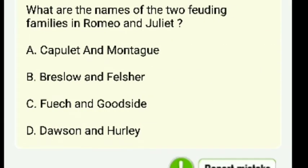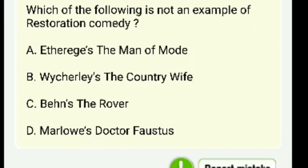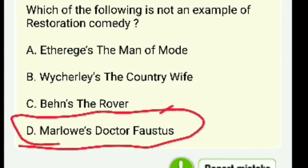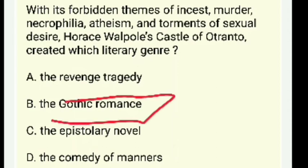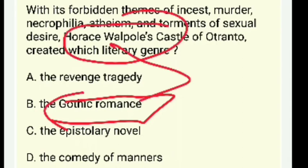What are the names of the two feuding families of Romeo and Juliet? The answer is Capulet and Montague. Which is NOT an example of Restoration comedy? Marlowe's Dr. Faustus — it was before Shakespeare's era. Horace Walpole's Castle of Otranto created which literary genre? The right answer is gothic fiction — Horace Walpole is associated with gothic romance.